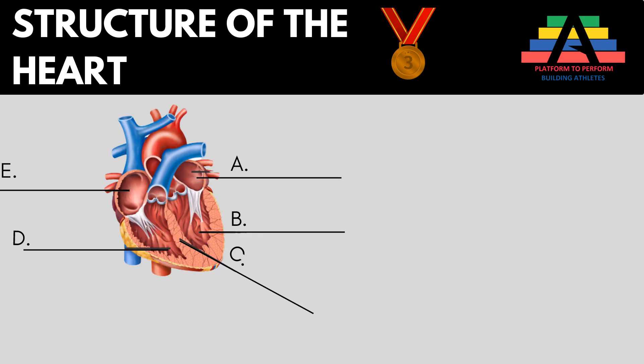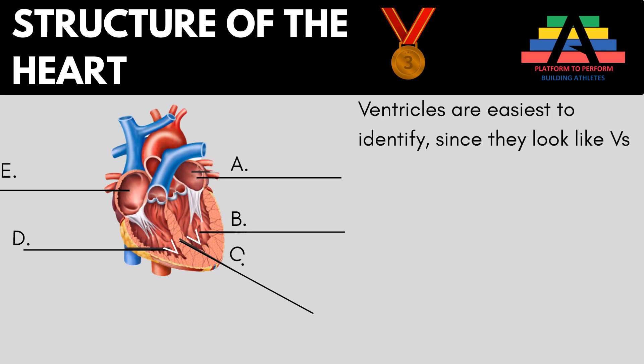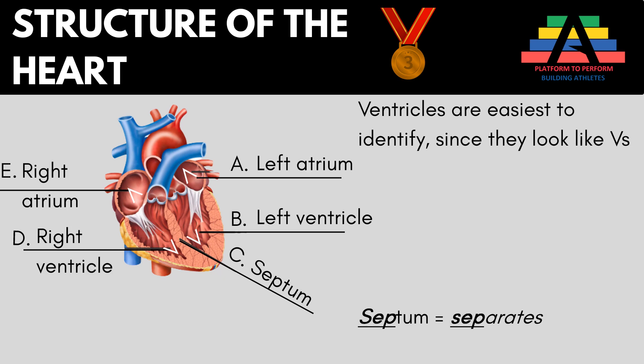In the labelling question, identify the ventricles first — D and B are the ventricles, and A and E are the atria sitting on top. The small structure in the middle is called the septum. The easy way to remember this is that the septum separates — just as a septum separates your nostrils — and in the heart it keeps blood flow on each side separate.